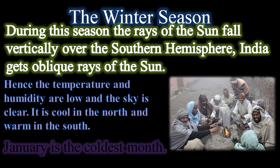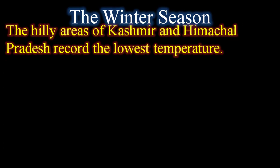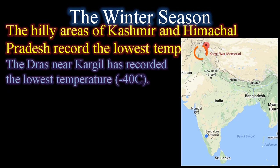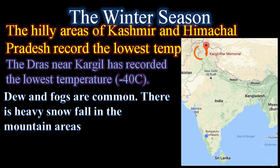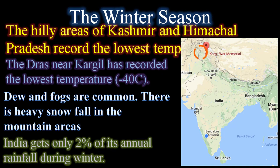January is the coldest month during winter season. The hilly areas of Kashmir and Himachal Pradesh record the lowest temperatures. The place called Dras, near Kargil, has recorded the lowest temperature of minus 40 degrees Celsius. There is heavy snowfall in mountain areas, and overall India gets only 2 percent of its annual rainfall during winter season.